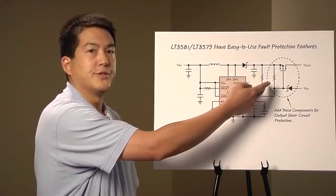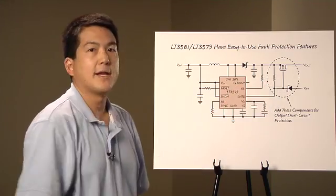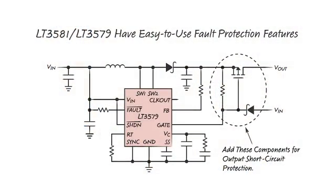This PMOS resistor and diode are added, as shown, to the converter circuit. When the LT3581 or LT3579 senses that the current in the power path has increased beyond a predetermined level, the part will enter the fault mode.